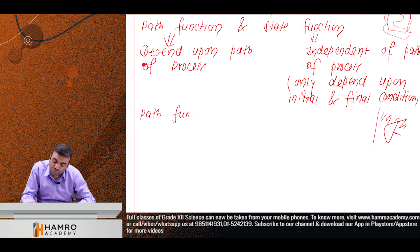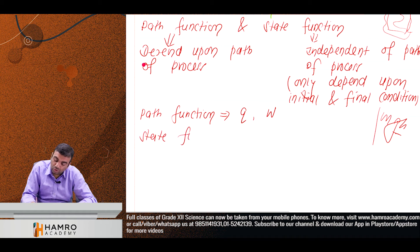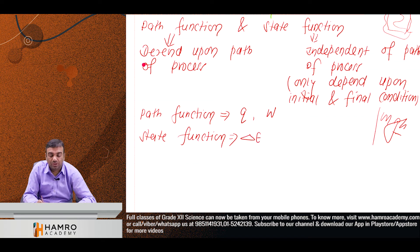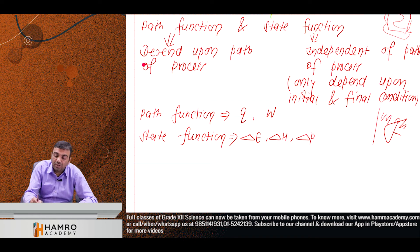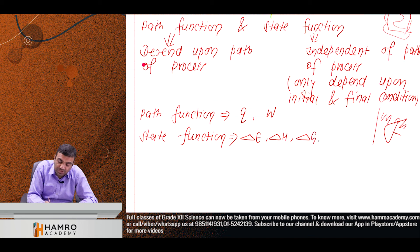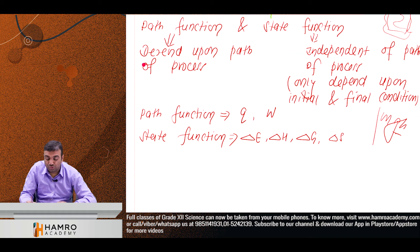In thermodynamics: path functions are heat (q) and work done (w). State functions include: internal energy change (ΔE), enthalpy change (ΔH), pressure change (ΔP), Gibbs free energy change (ΔG), and entropy change (ΔS).